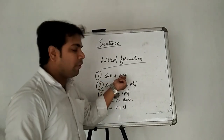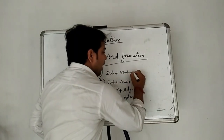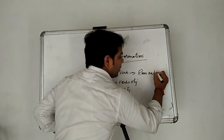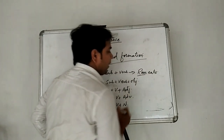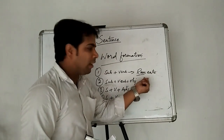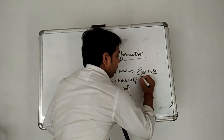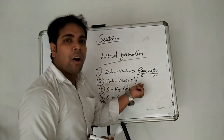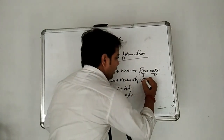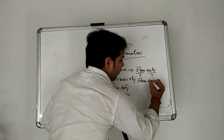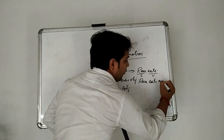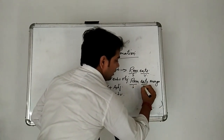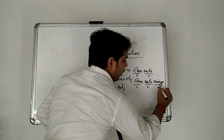First is subject plus verb. Let us look at the example: Ram eats. In this sentence, Ram is the subject and eats is the verb. Second is subject plus verb plus object. For example: Ram eats mango. Here Ram is the subject, eats is the verb, and mango is the object.